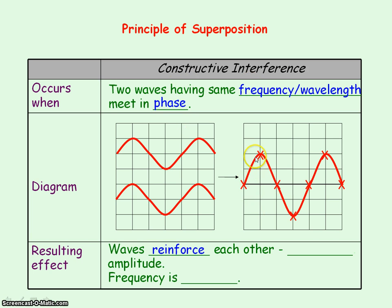So it's constructive interference. In this case, the amplitude has doubled because the original two waves have the same amplitude. But you can get constructive interference where they have different amplitudes and the resulting amplitude will be a maximum. Note that the frequency of the wave has remained the same.